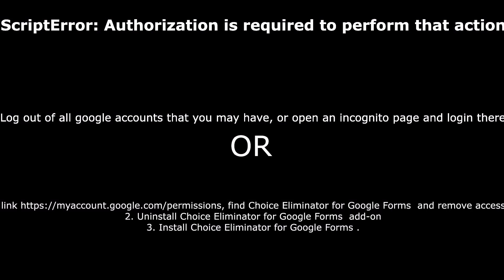If you get an authorization error when trying to access your Google Form, make sure you're not signed in to several Google accounts — log out of all of them. If that doesn't work, try going into a new incognito page and logging in there. If both of those don't work, go to myaccount.google.com/permissions, find Choice Eliminator, remove access to uninstall it, and then reinstall the add-on to see if that fixes the problem.